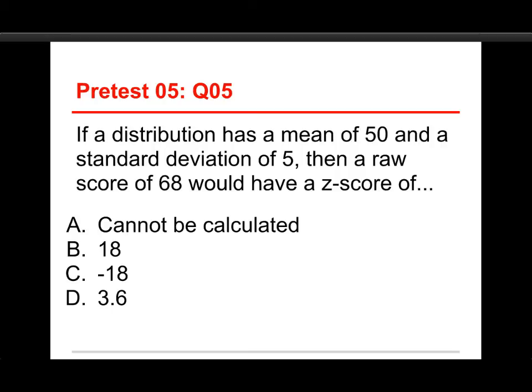Alright, last one. If a distribution has a mean of 50 and a standard deviation of 5, then a raw score of 68 would have a z-score of what? Well, let's take a look. The answer is 3.6, but let me show you how the formula works.